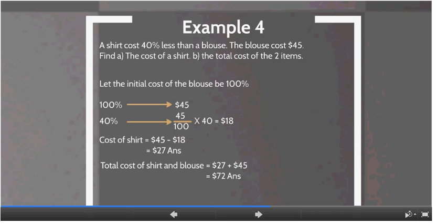Then part B of the question wants to find the total cost of the two items. Total cost of shirt and blouse equals $27 plus $45 equals $72.